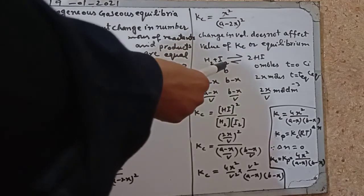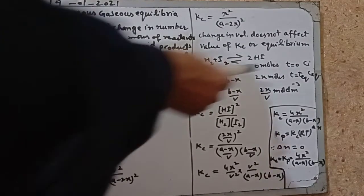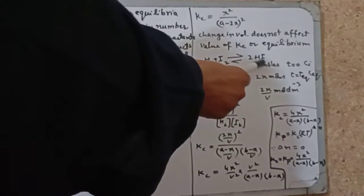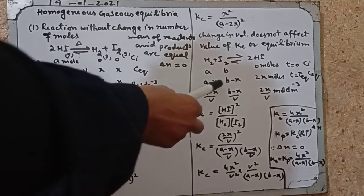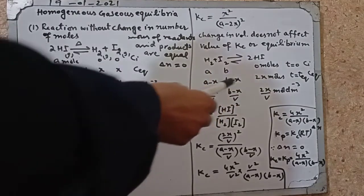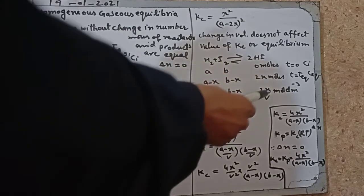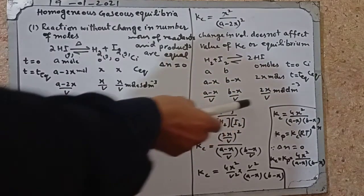If you combine H2 and I2, after equilibrium time, equilibrium concentrations will be a-x, b-x for reactants, and 2x moles product. Total volume is v. Moles per cubic decimeter concentration will be a-x over v, b-x over v, 2x over v.